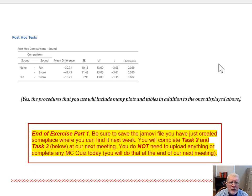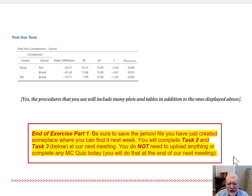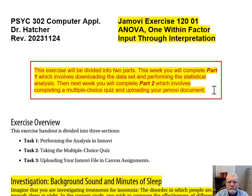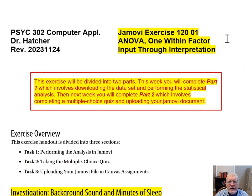At the top of page 5, I even show you what the post hoc test table should look like. Did you get the same mean difference and the same T statistic for the first comparison? Check your output carefully against mine and make sure the numbers match. That brings us to the end of exercise Part 1. Be sure to save your Jamovi file someplace where you can find it next week. You'll complete Task 2 and Task 3 at our next class meeting. That will get you started with Part 1 of Jamovi Exercise 120-01, ANOVA with 1 Within Factor, Input Through Interpretation.